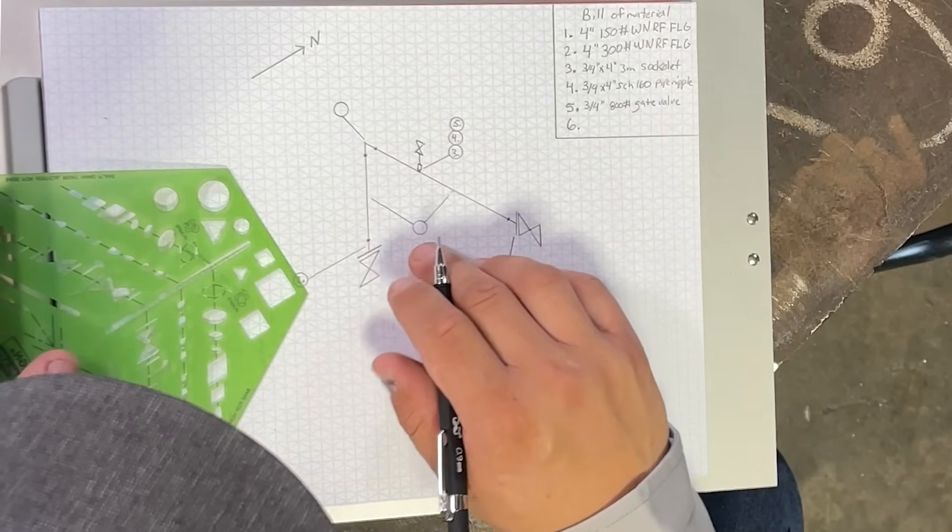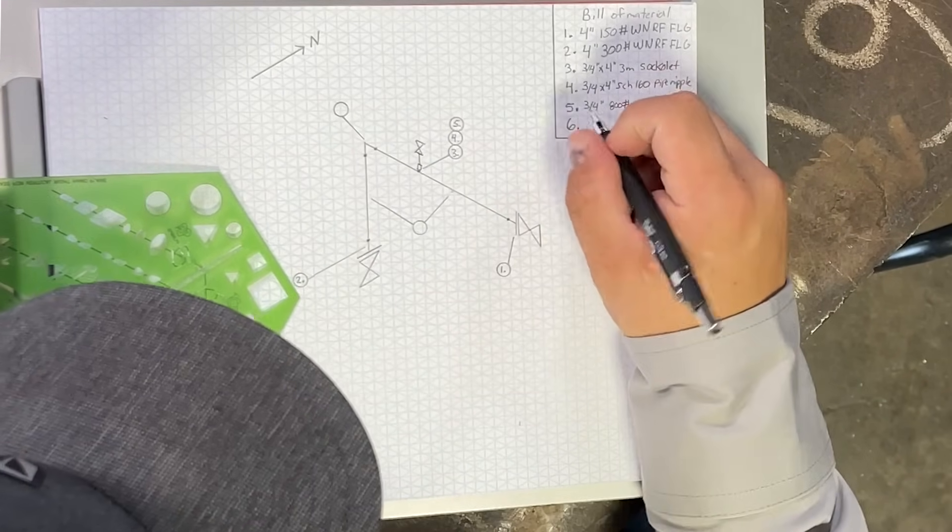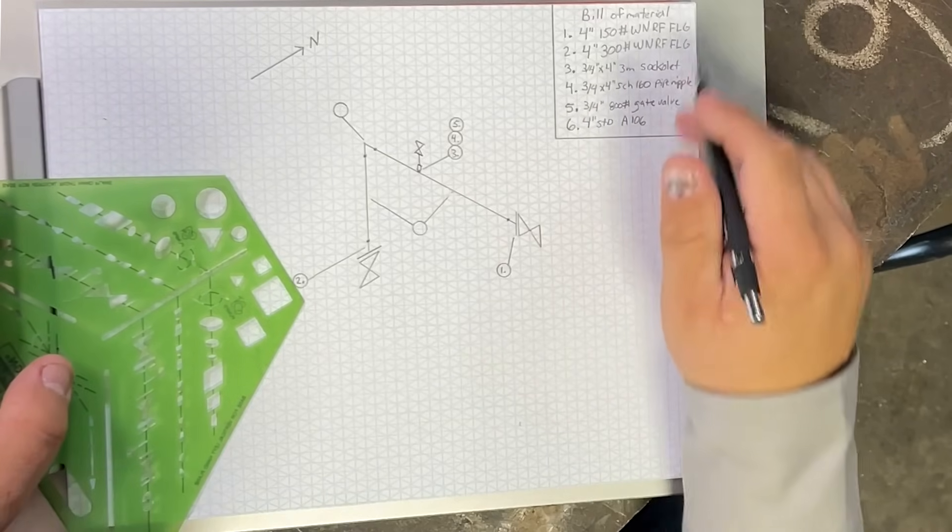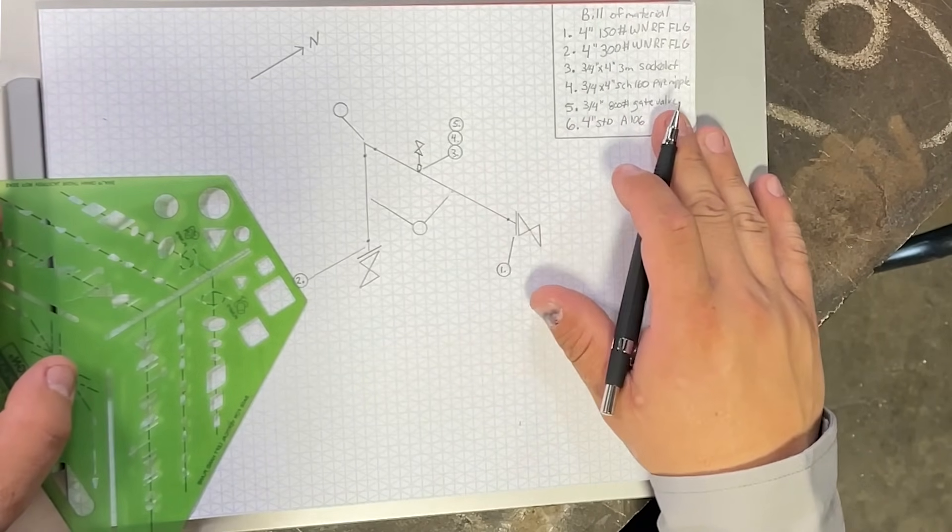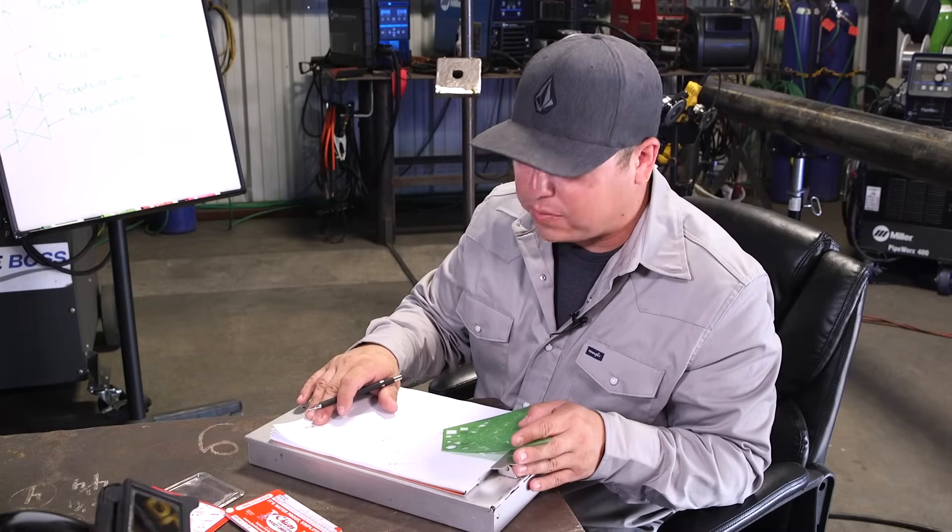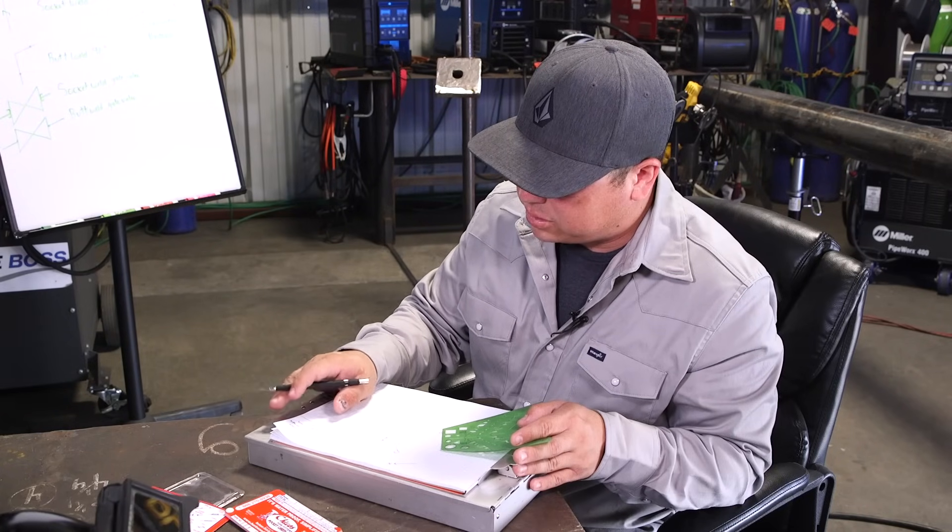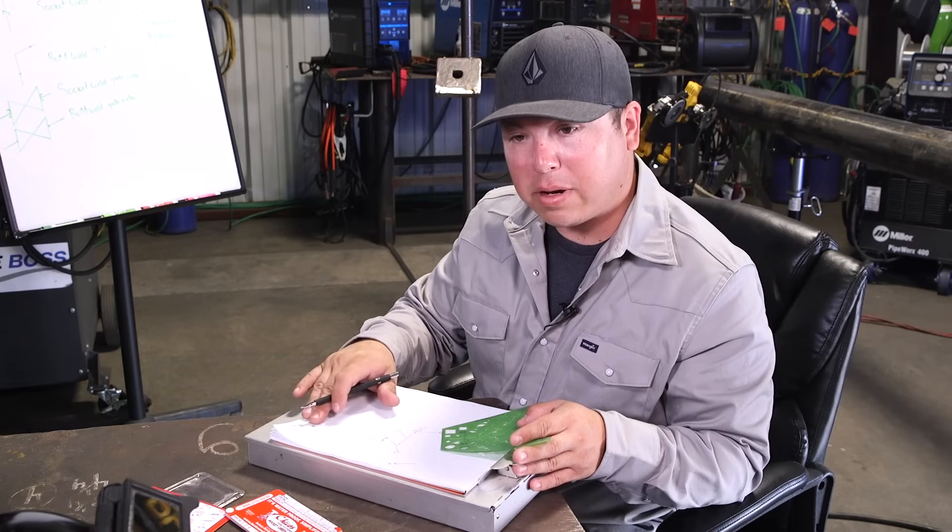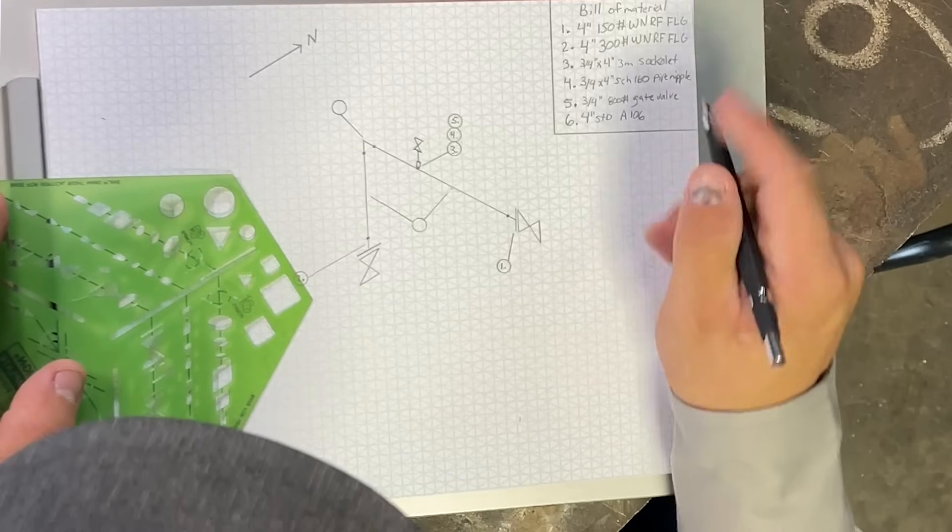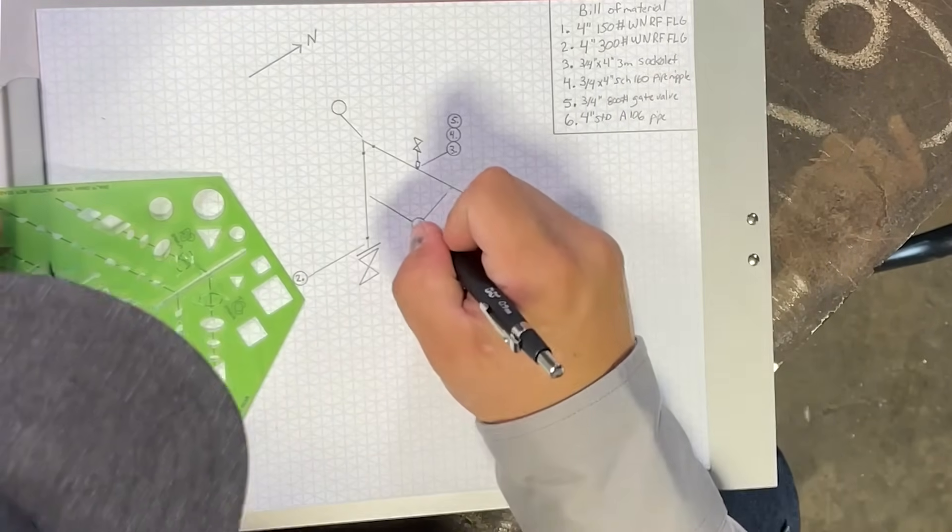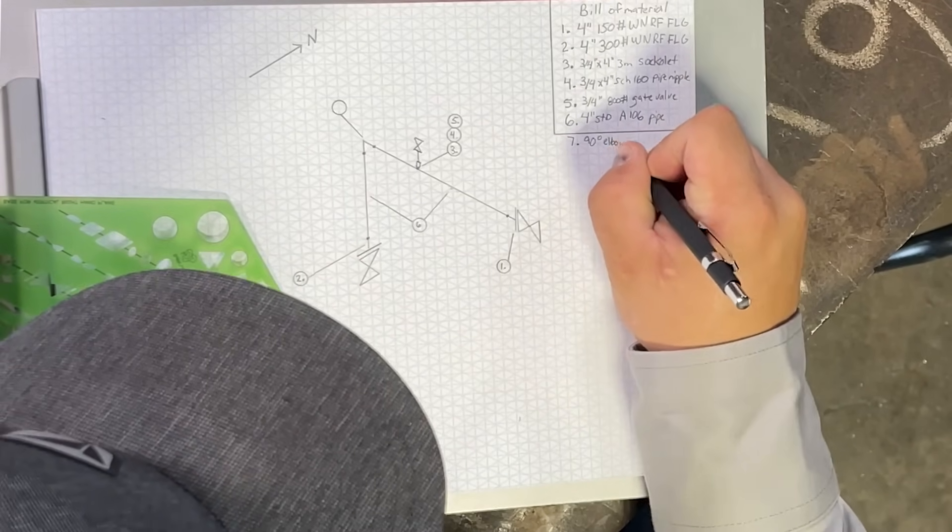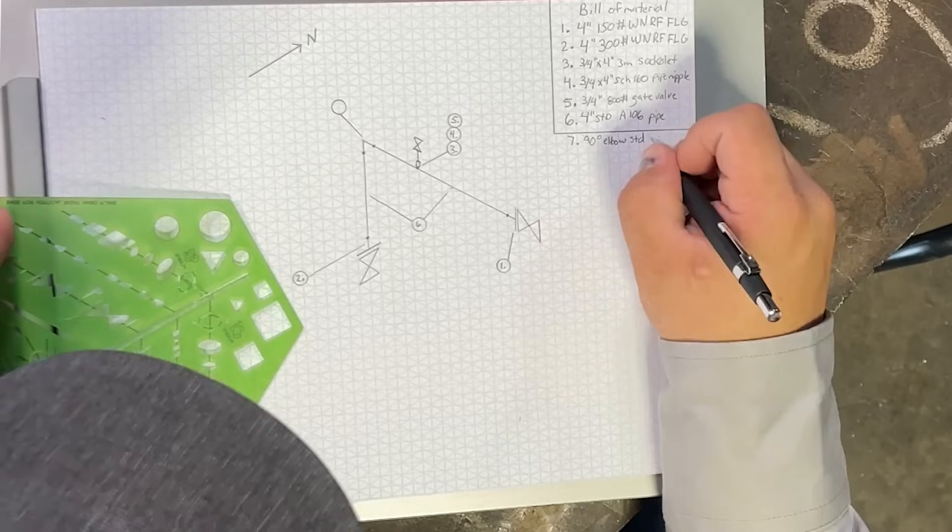So here we need to designate our piping. This is going to be four inch standard A106. And as you become more familiar with all these abbreviations by looking at other drawings, this will designate material and stuff like that. But usually if you're rebuilding something, you'll get a pipe spec specifying what kind of material you should be using. For this, we're just doing an example of carbon steel here. Six and I'm actually missing a line here. So I'm just going to draw it out here. Seven, we'll put our 90, 90 degree elbow standard.